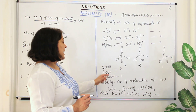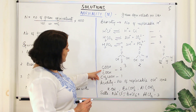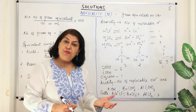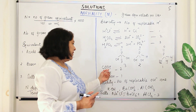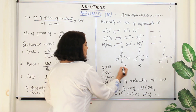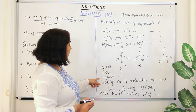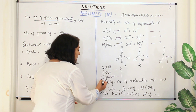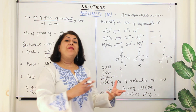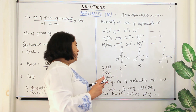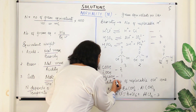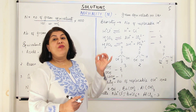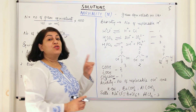In oxalic acid, the two hydrogens are both connected to oxygen atoms and both can contribute to the acidic character, so the basicity of oxalic acid is two. In acetic acid, the three hydrogens connected to carbon cannot be removed as H⁺ ions. Only the one hydrogen connected to oxygen is available for protonation. Therefore, the basicity of acetic acid is one.